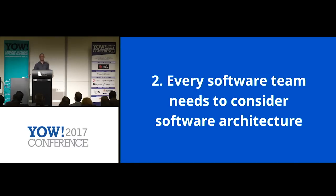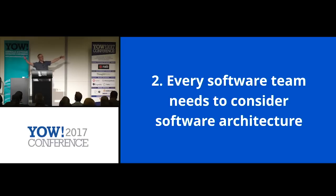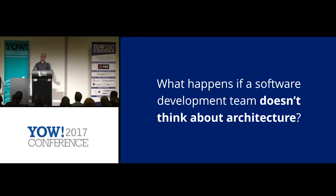Number two: every software team needs to consider software architecture. And I do mean everybody — whether you are a one-person team in your shed, or a multinational organization with thousands of people around the world. Architecture is important to every single one of those teams. And to put a different spin on this: what happens if a software team doesn't think about architecture? The answer is: you get a mess.